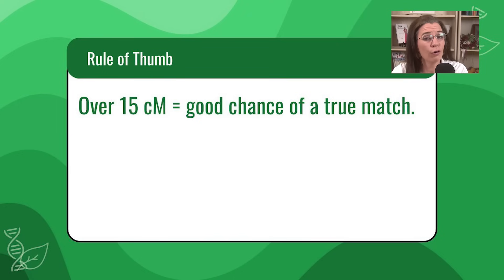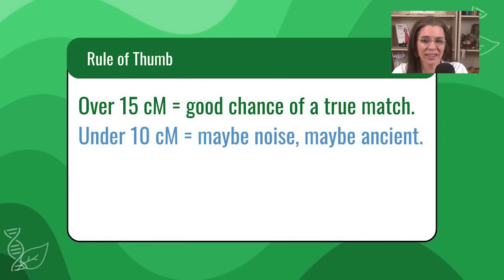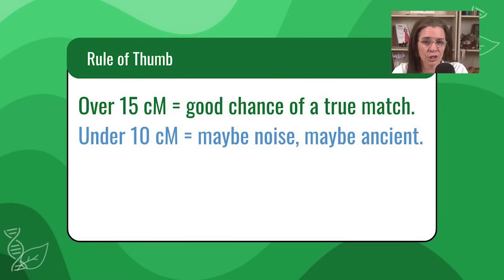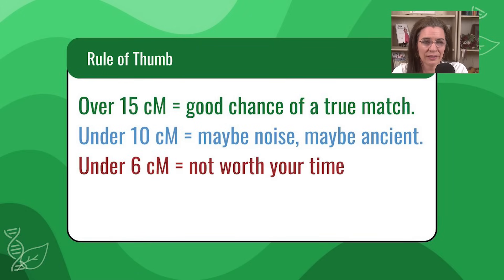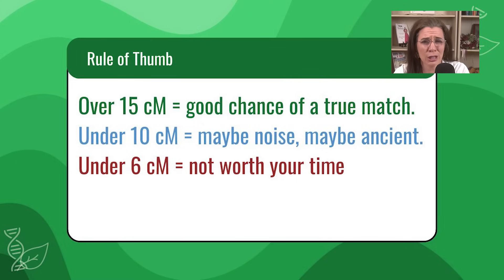Here's a quick rule of thumb. Over 15 centimorgans means a good chance of a true match. Under 10 centimorgans, that's maybe noise — it may be an ancient DNA match, so research those with caution. Under 6 centimorgans is not usually worth your time.